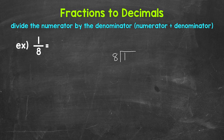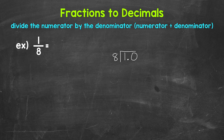How many whole groups of 8 in 1? How many 8s in 1? Well, we can't do that. So we need to use a decimal and a 0 in order to work through this. Once we have that decimal and the 0, we can bring the decimal straight up into where the quotient — the answer — will be.